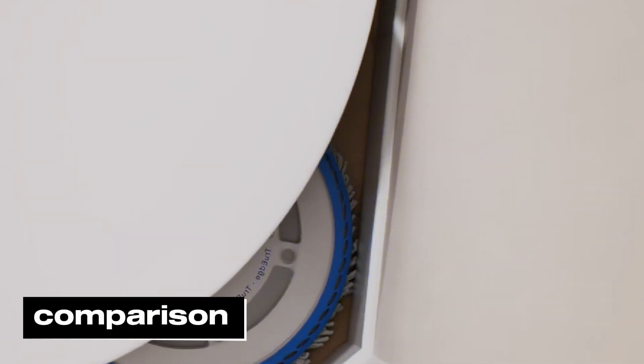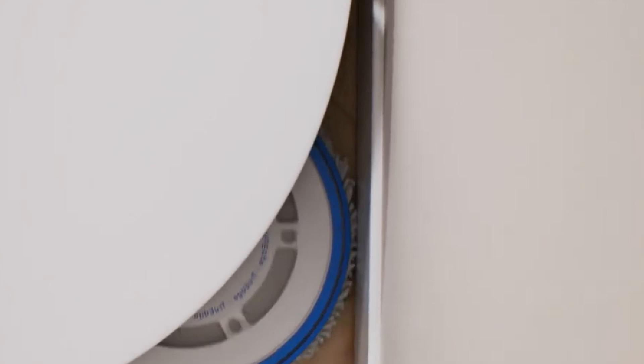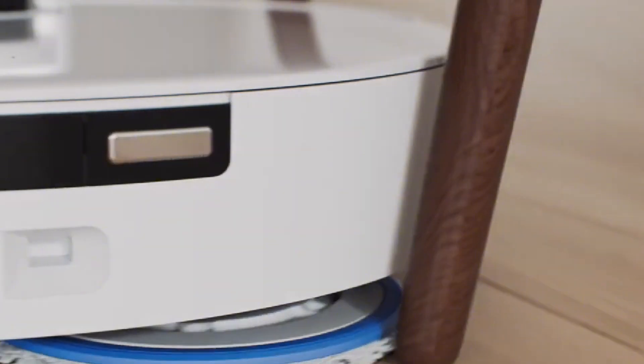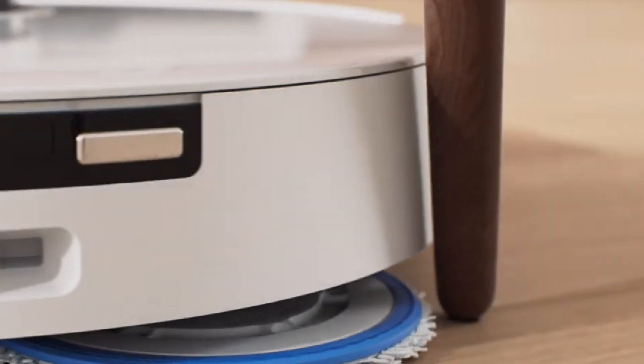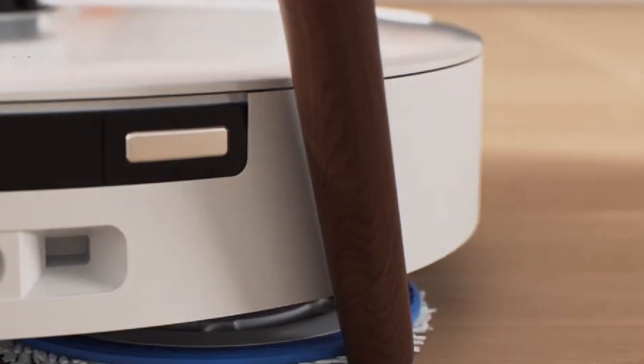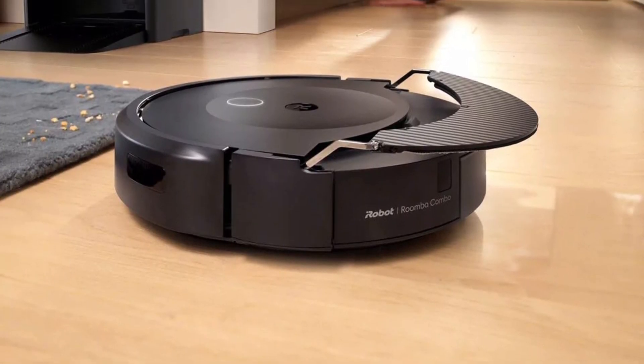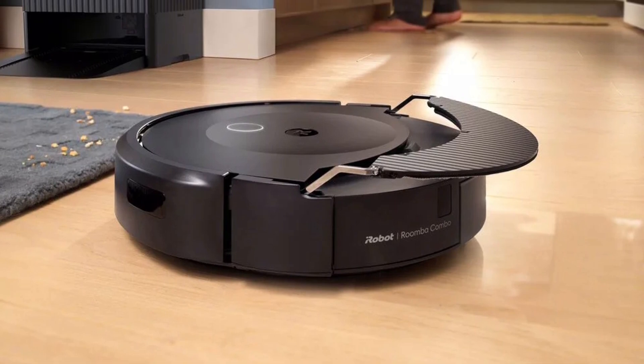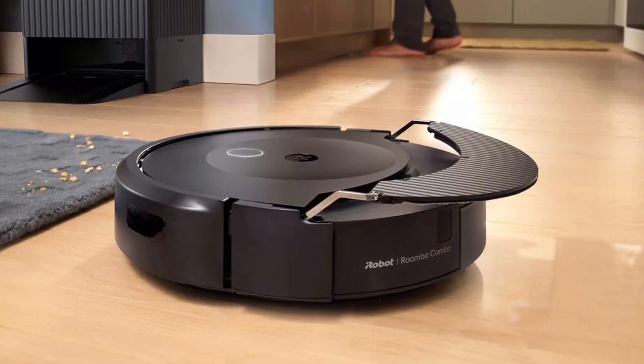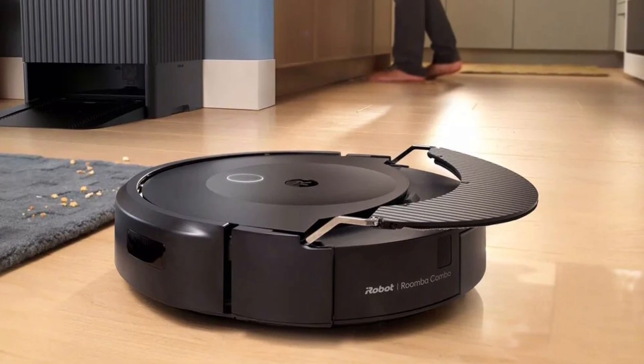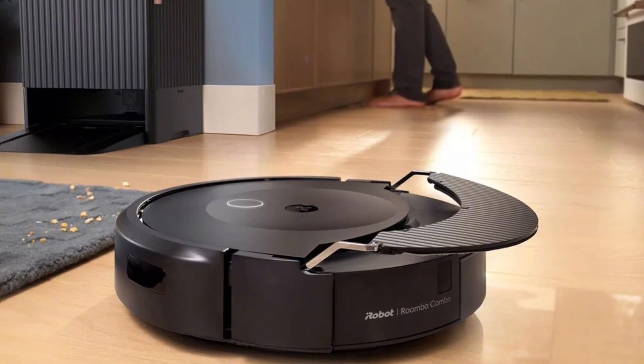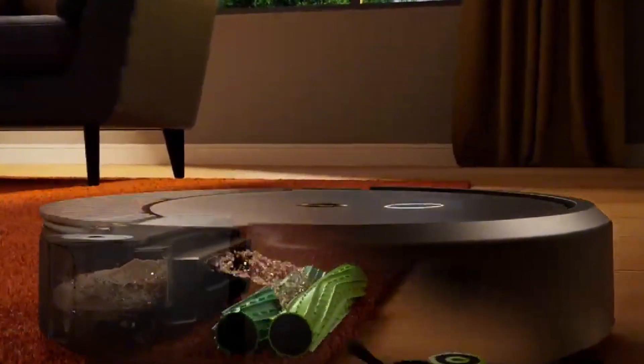Comparison: When comparing the Ecovacs D-Bot T30 to the iRobot Roomba 10, we can see both similarities and differences that may influence your purchasing decision. The Roomba 10, recently released in 2024, is well regarded for its powerful suction and advanced cleaning algorithms. This model features a dual multi-surface rubber brush system that effectively prevents hair tangles, making it a great option for pet owners.